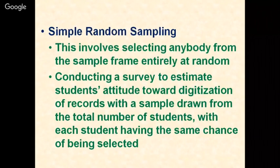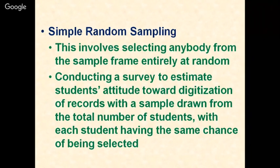Simple random sampling involves selecting anybody from the sample frame entirely at random using the lottery method. For example, conducting a survey to estimate students' attitudes toward digitization of records, with a sample drawn from the total number of students where each student has the same chance of being selected — this is achieved only through the lottery method.